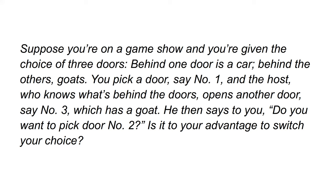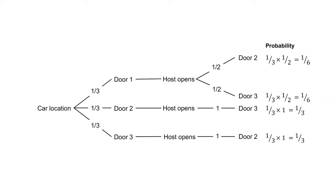Assume the rules are: the host must always open a door you did not choose; the host must always reveal a goat and never the car; and the host must always offer you the choice to switch between your chosen door and the remaining closed door. The question being asked is: what is the probability that the car is behind door two, conditional on the host opening door three?